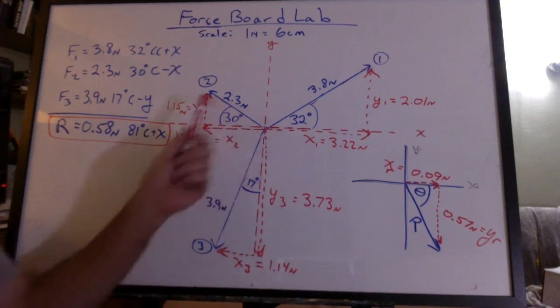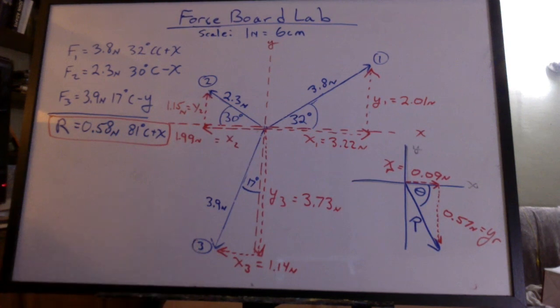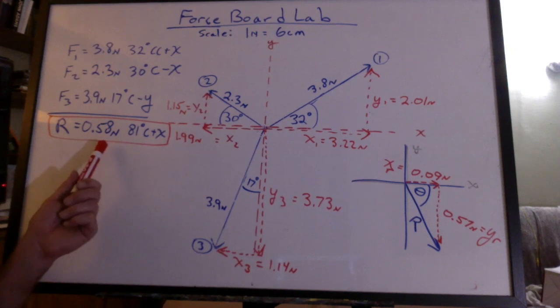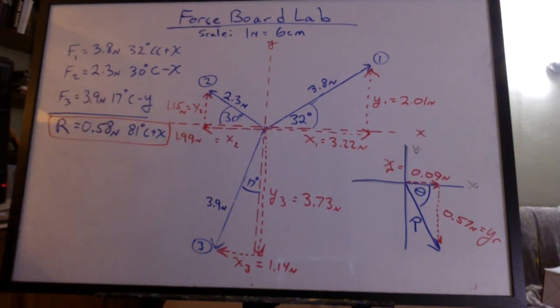The next part, we're going to want to put these vectors tip to tail so we can find the resultant graphically. Now, I'm going to put that data all in the spreadsheet. What's interesting here is that that resultant has a very small magnitude compared to the magnitudes of my individual vectors. I'm starting to see a trend on the spreadsheet.